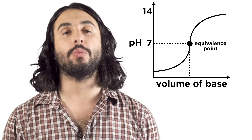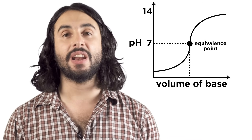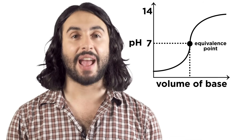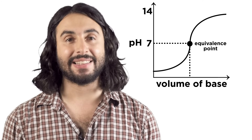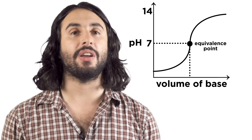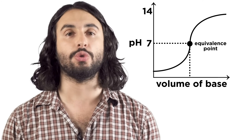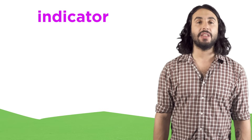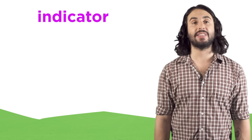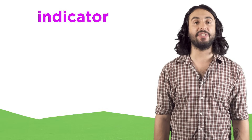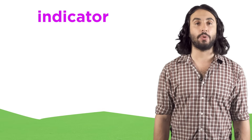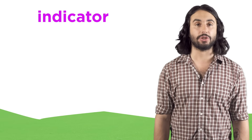The equivalence point is where precisely enough base has been added to neutralize the exact amount of acid in solution. When we perform titrations, we recognize the equivalence point by using something called an indicator — a substance that will turn a vivid color once the equivalence point has been reached.